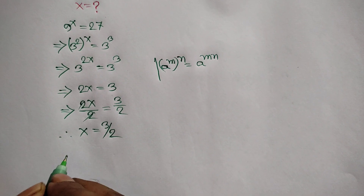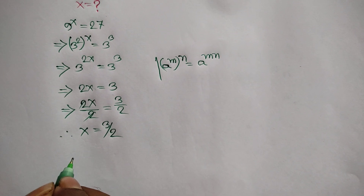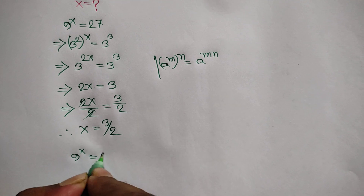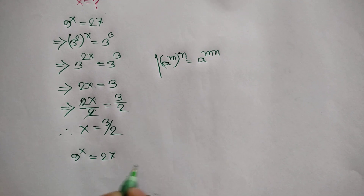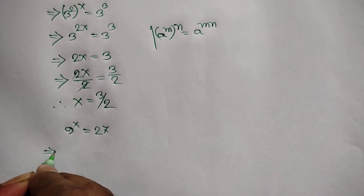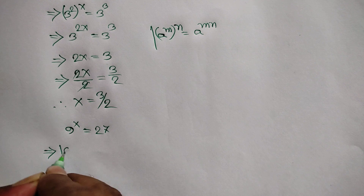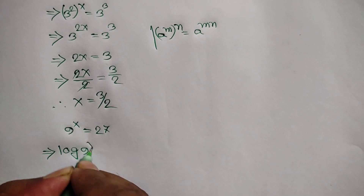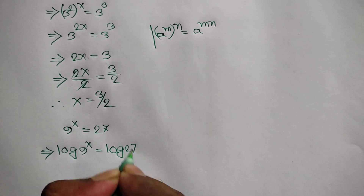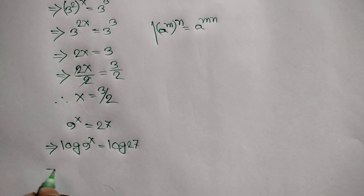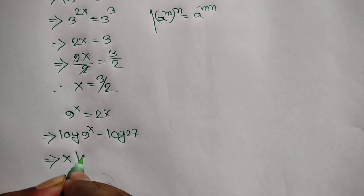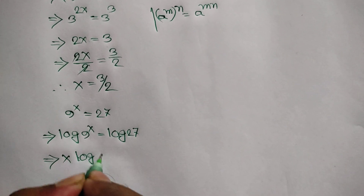Now another way. We have given 9 to the power x is equal to 27. Taking log of both sides, we can write log of 9 to the power x is equal to log of 27. Here we can write x log of 9 is equal to log of 27.